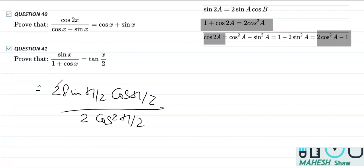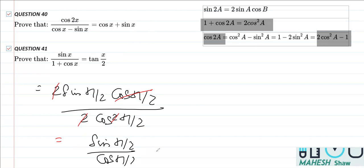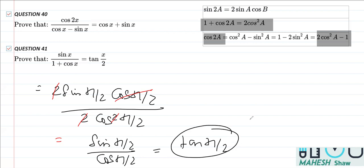Now we can clearly see that the 2 and 2 get cancelled, and cos(x/2) gets cancelled with its square. That means we are left with sin(x/2) over cos(x/2), which can be written as tan(x/2), since sin divided by cos is tan. So sin(x/2) over cos(x/2) is equal to tan(x/2), and that is the RHS.